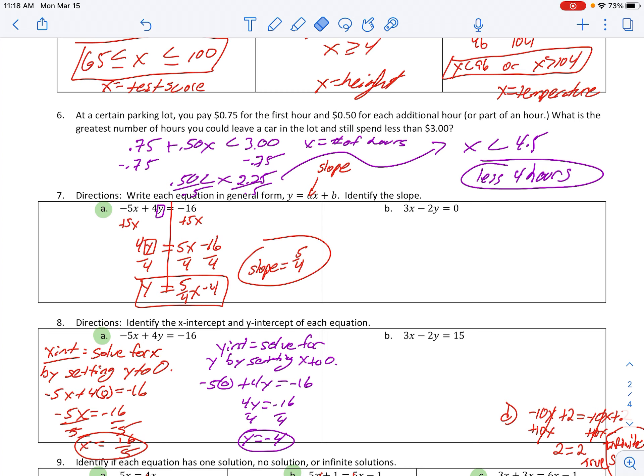And when you do that, five hours times $0.50 an hour is $2.50 plus the $0.75 you already have to pay. That's going to put you at $3.25. So, you need to be four hours or less than that. Let me rephrase that. Four hours is fine. Less than or equal to four hours.